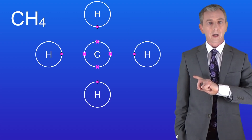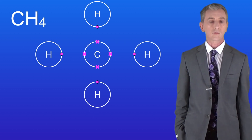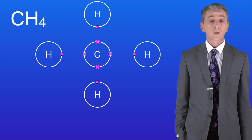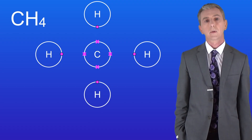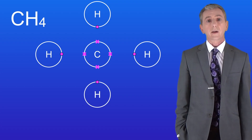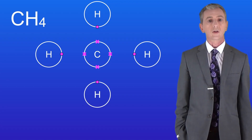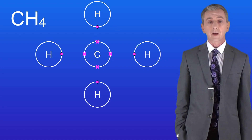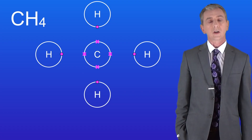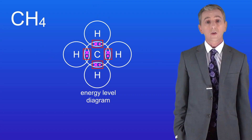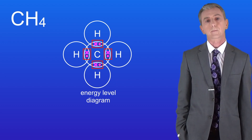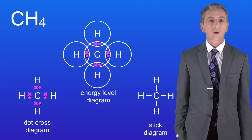Here are the four hydrogen atoms, and remember hydrogen only has one electron. I'd like you to pause the video now and try and draw the covalent bonding in the methane molecule. The carbon atom needs four more electrons to achieve a full outer energy level, and each hydrogen atom needs one more electron. So they can achieve this by overlapping their outer energy levels like this, and we can see that there are four single covalent bonds in a molecule of methane. Here are the dot and cross diagram and the stick diagram for the methane molecule.